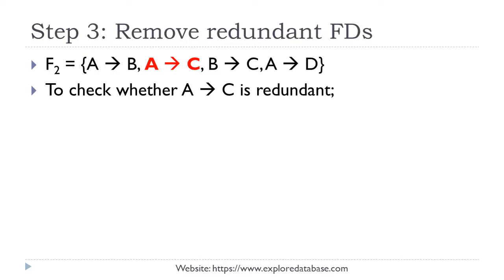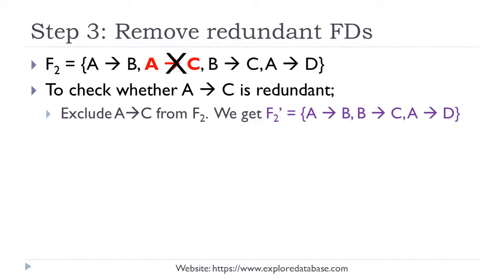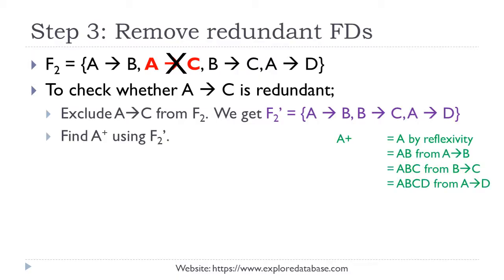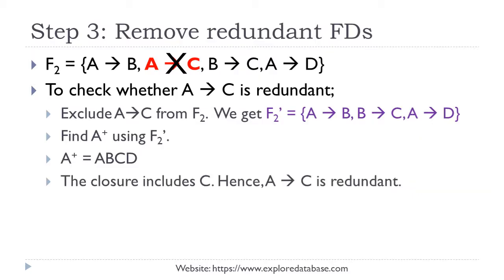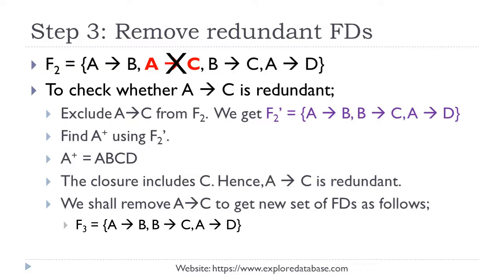Now let us check whether a→c is redundant. We exclude a→c from f2 to get f2''. We find the closure of a using f2'' alone. If I know a, I know b; if I know b, I know c; and I also know d. So a⁺ = {a, b, c, d}, which includes the right-hand side attribute c. Hence, a→c is redundant and can be excluded. We derive a new set of functional dependencies f3.